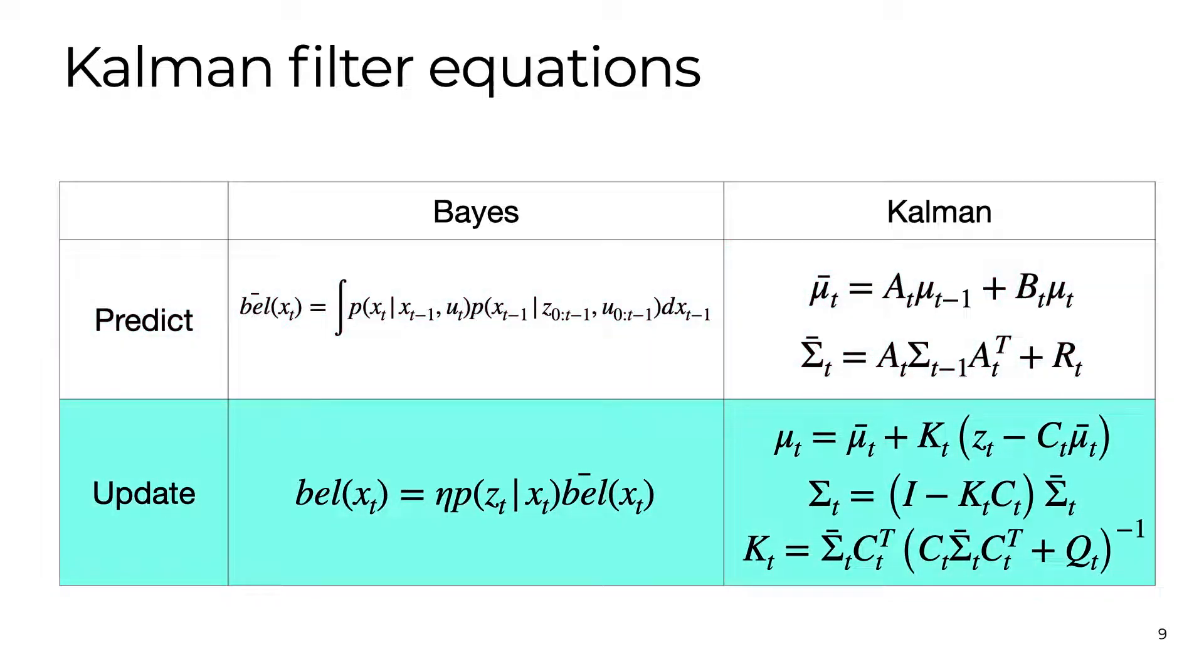In the case of updating, things are a little bit more complicated. We don't go through the details here, but the key idea is that we need some way to decide how to balance our current belief about our state with what the new measurement is telling us. This is calculated as the Kalman gain K, shown as the last equation on the bottom right.